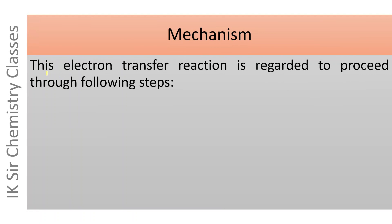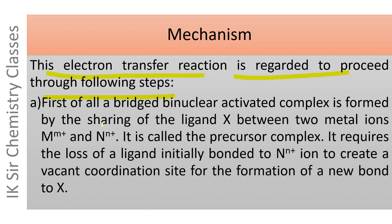This electron transfer reaction is regarded to proceed through the following steps. First, a bridged binuclear activated complex — the precursor complex — is formed by sharing of ligand X between two metal ions M^(M+) and N^(N+), where X acts as a bridging ligand. Formation of this precursor complex requires the loss of a ligand initially bonded to N^(N+) to create a vacant coordination site for forming a new bond with ligand X.